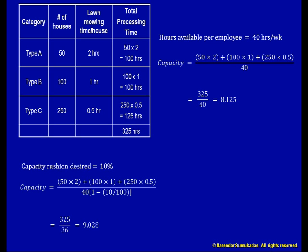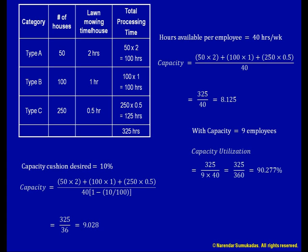In my capacity calculation, I have discounted the 40 hours in the denominator by 10%. In view of this cushion, I now need 9.028 employees. I think I'll settle for 9 employees, 9 lawnmowers, 3 pickup trucks, etc. If I settle for 9 employees, will I still have the desired 10% cushion? Obviously, I will have a slightly smaller cushion. My capacity utilization will be 90.277%, and my capacity cushion will be 9.723% instead of the desired 10%. But I think I can live with that.